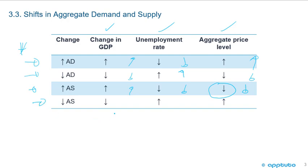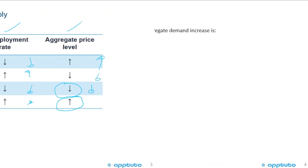A decrease in aggregate supply is just going to be the opposite: it decreases the change in GDP, increases the unemployment rate, and increases the aggregate price level. Less supply, higher price.